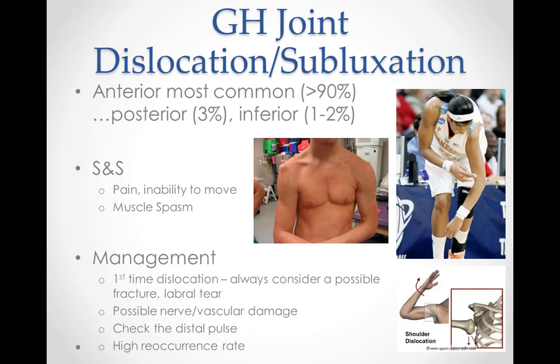The patient will usually hold the arm close to the body and resist moving or turning it outwards. If there is any nerve or blood vessel damage, there may be pins and needles, numbness, or discoloration to the arm and hand. Immediate treatment has two stages: first, to protect the shoulder joint and prevent further damage, and second, to seek medical attention as soon as possible. First-time dislocations should always be considered for fracture and possible labral tear, and possible nerve and vascular damage is common. Check the distal pulse and ensure that rehabilitation includes shoulder strengthening exercises, as a high rate of recurrence is likely with shoulder dislocations.